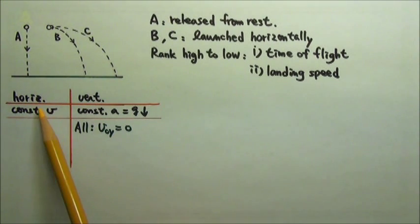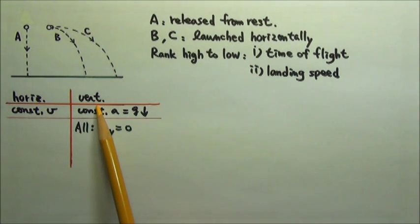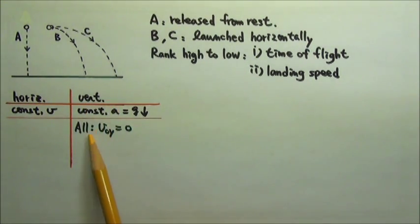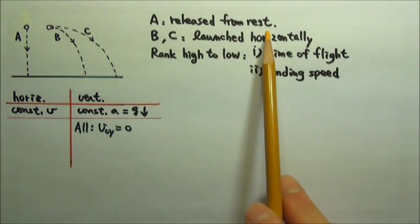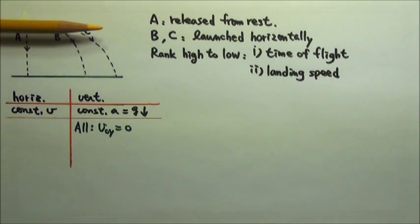For projectile motion, we have to look at the horizontal and vertical separately. In the vertical direction, all three start with zero initial velocity. A starts from rest, while B and C are launched horizontally, which means their initial velocities are completely horizontal with no vertical components.